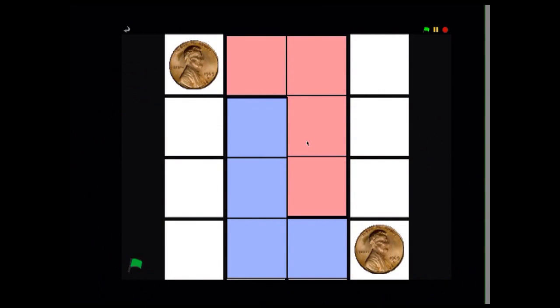So the aim of The L Game is to move your L in such a way that the opponent is unable to move his or her L. You're able to move your L to any available spot on the board and you can translate it, rotate it, and reflect it. And you're also allowed to move the coins.